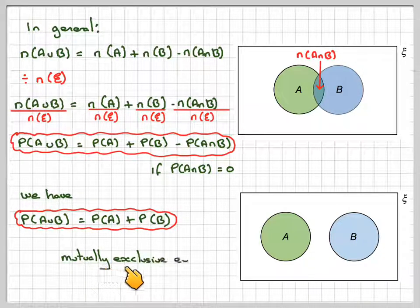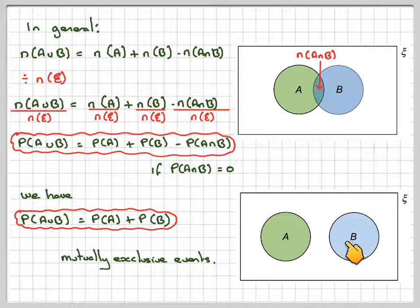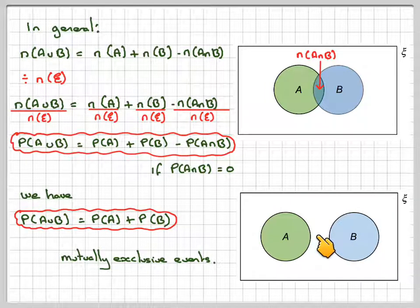And this is known as mutually exclusive events, like we looked at before. One event, if one event happens, the other cannot happen. Therefore, there is an intersection.